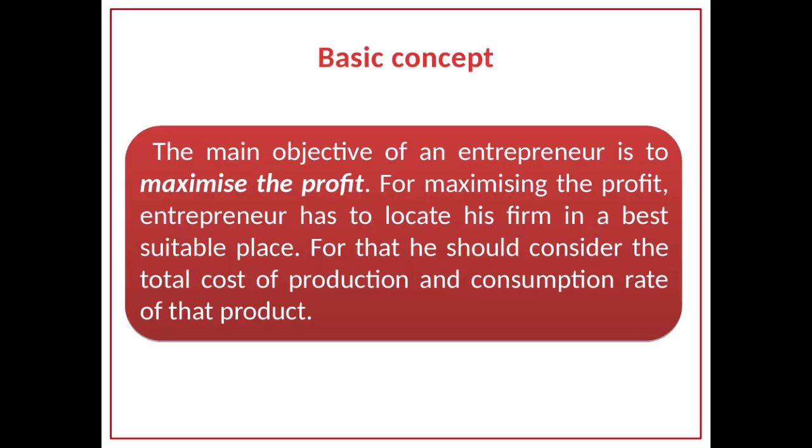Losch says that profit has a role to play in locating the industry. This theory says that the main objective of an entrepreneur is to maximize his profit. For maximizing his profit, he wants to find out the best suitable place for his industry. Losch is of the view that for identifying this best suitable place, an entrepreneur should consider the total cost of production and the consumption rate of his product in various locations, and identify the best suitable place to locate his industry.